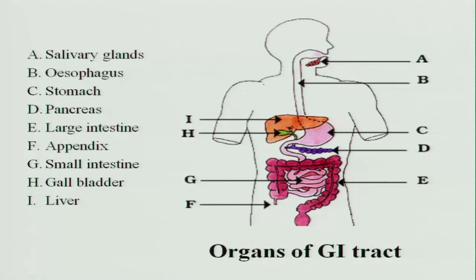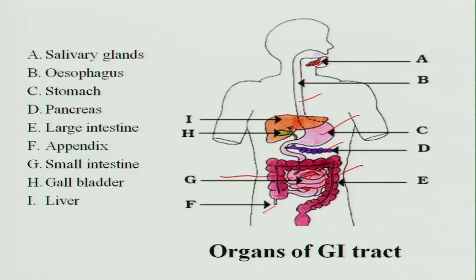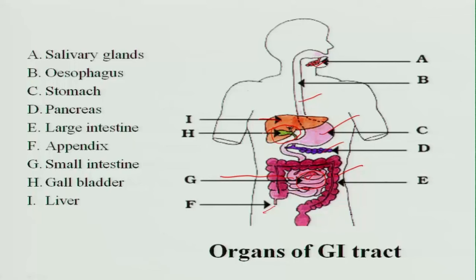The organs of the gastrointestinal tract include the salivary glands, the esophagus (food pipe), the stomach, the pancreas — which releases many enzymes to digest various nutrients — the large intestine, the appendix (an accessory organ which may have some disease-protecting function), the small intestine, and the liver. The liver is the largest gland, producing and metabolizing many enzymes. The gall bladder, situated in the liver, stores bile produced by the liver and releases it into the duodenum whenever fatty food enters.